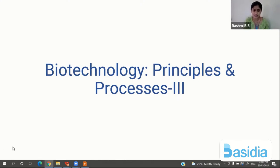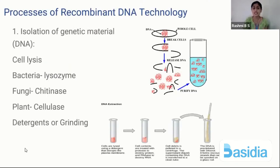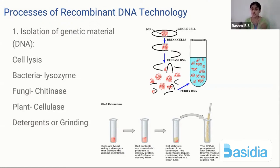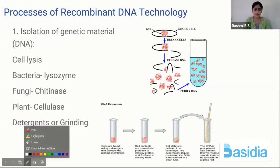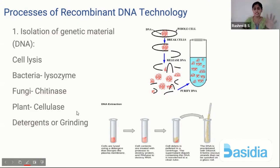In today's session, we are mainly going to discuss the process of DNA technology. We now know what a vector is, what recombinant DNA is, and how to make recombinant DNA. We know different biotechnological tools. Using all those, we are making a product — imagine insulin. The first step in recombinant DNA technology is isolation of genetic material. We need to isolate our gene of interest, which in this case is insulin.